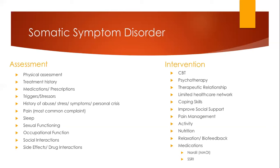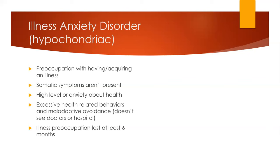Then we have illness anxiety disorder, formerly called hypochondria. The DSM-5 diagnosis is preoccupation with having acquired an illness. Their somatic symptoms aren't actually present, but the individual is so focused on developing them that it causes high levels of health-related anxiety. Contrary to popular belief, individuals with illness anxiety disorder often avoid healthcare - they don't see doctors because they're so anxious about being told something is wrong. So they do have excessive health-related behaviors, but also a maladaptive avoidance of getting health care when they actually need it. It can often involve misinterpreting body sensations, and it's more common if they've had a serious illness in childhood or had a loved one develop a serious illness in childhood.